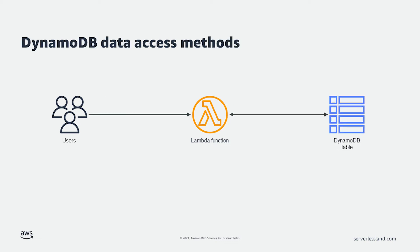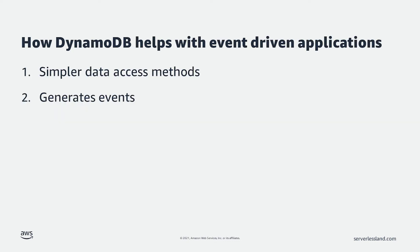DynamoDB makes this much easier by providing an extremely low latency API endpoint to access the database. Using the language-specific SDK in your Lambda functions, you can quickly call DynamoDB via this API to update or retrieve data. This means that you no longer have to maintain database connections in your Lambda functions.